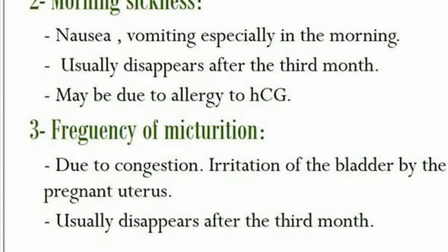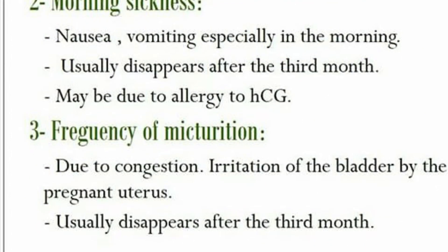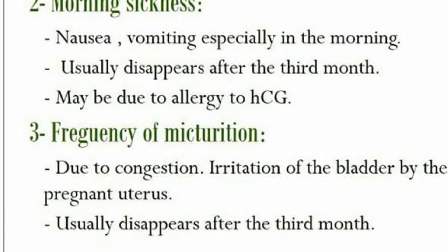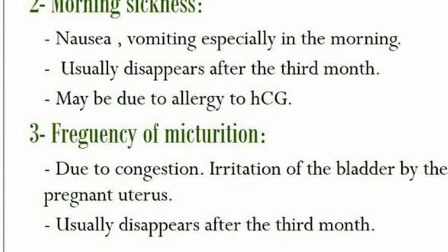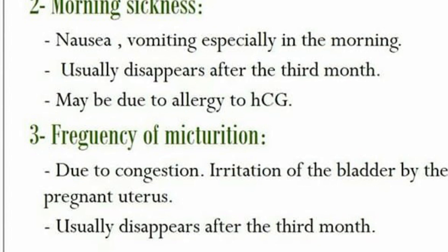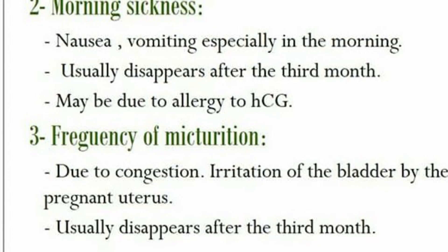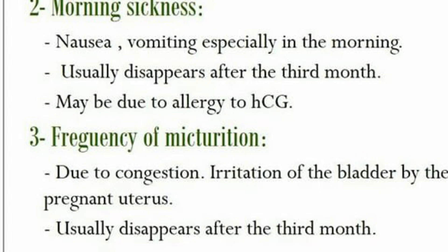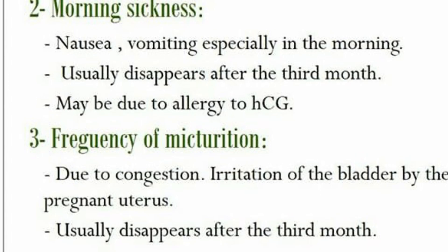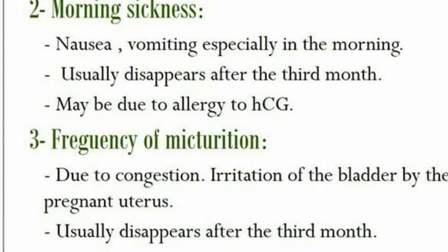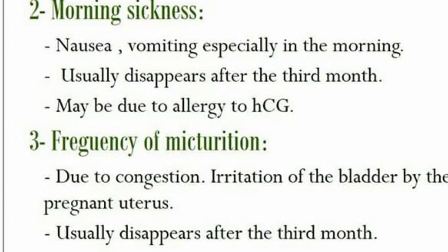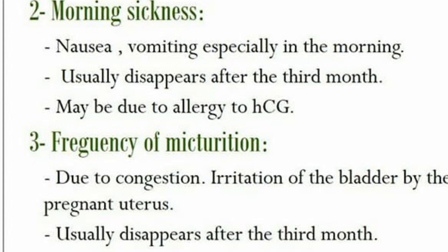The second symptom is morning sickness, which is basically nausea and vomiting especially in the morning. It usually disappears after the third month and may be due to allergy to human chorionic gonadotropin hormone. The third symptom is frequency of micturition.